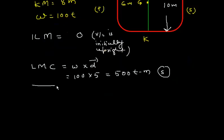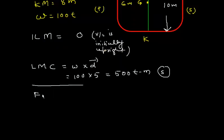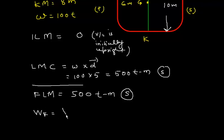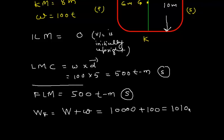Now let's find the final list moment. The final list moment is the algebraic sum of both list moments, so it is 500 ton-meters towards starboard. The final displacement is the initial displacement plus what we loaded, which is 10,000 plus 100, giving 10,100 tons.